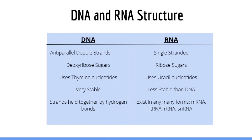In summary: DNA is always double stranded and RNA is single stranded. DNA contains deoxyribose sugars — a ribose sugar without an oxygen atom — while RNA contains traditional ribose sugars. DNA uses thymine nucleotides and RNA uses uracil nucleotides. DNA, owing to its double-stranded nature and lack of oxygen atom, is more stable than RNA. It's important to remember that RNA makes up other important biomolecules such as mRNA and tRNA.